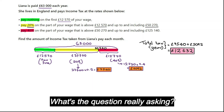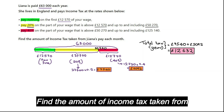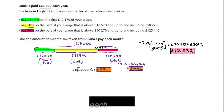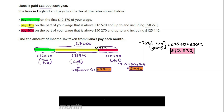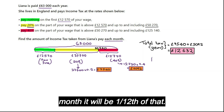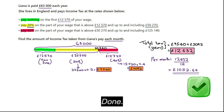The question asks: find the amount of income tax taken from Liana's pay each month. This figure of £12,632 is for the whole year, so per month it'll be one twelfth of that. The final answer is £1,052 and 67 pence.